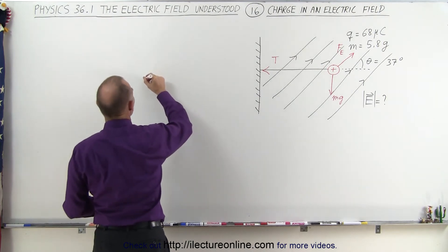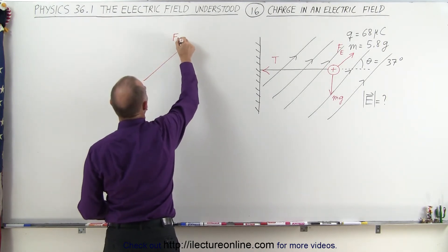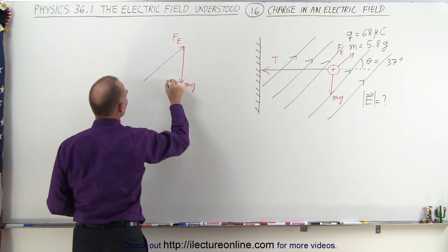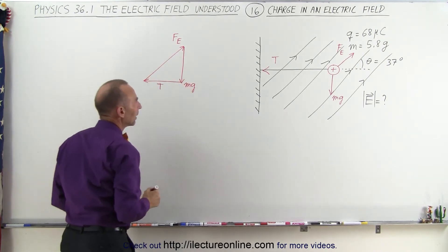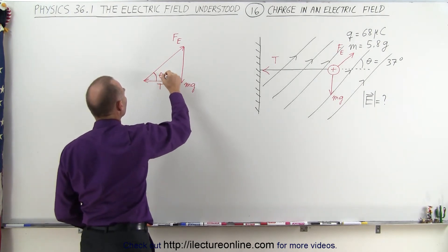So we have the force going in this direction, which is the force due to the electric field. We have a force going in this direction, which is the force due to the weight. And then we have a force going this direction, which is due to the tension on the string. And you can tell by looking at the drawing here that this angle here is theta, which is 37 degrees.